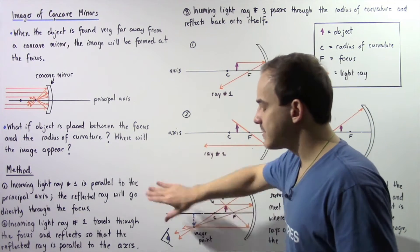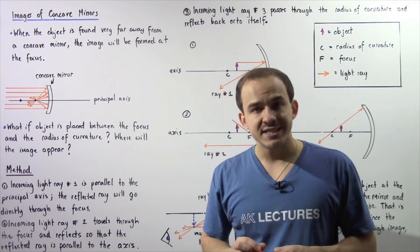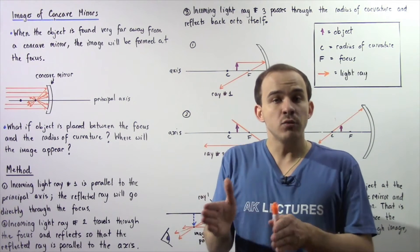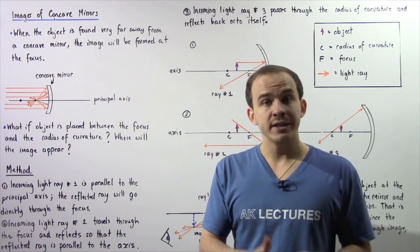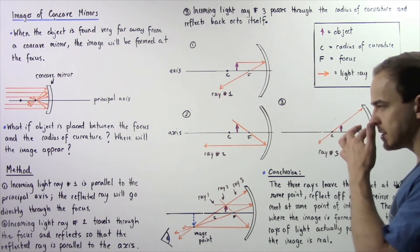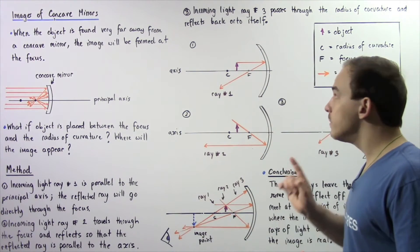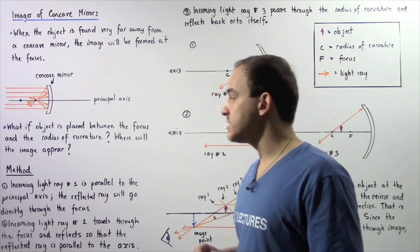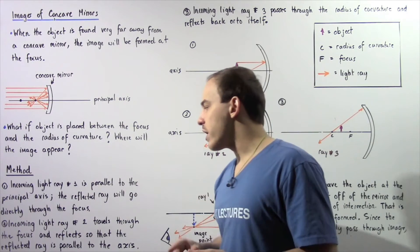Let's begin by looking at step number one. These three steps essentially involve looking at specific light rays that bounce off the object, travel to the mirror, bounce off the mirror, and then we examine the point where all these light rays intersect — that point is the image point. For step one, we examine incoming light ray number one. This light ray bounces off of our object parallel with respect to the principal axis, and when it reflects off of our mirror, it will travel directly through the focus.